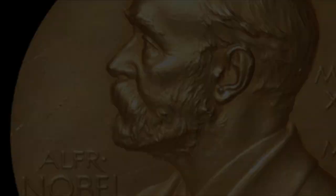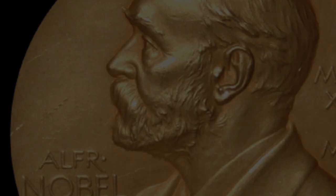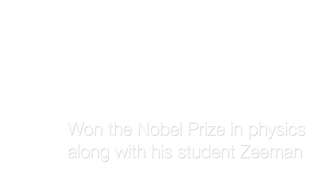Hendrik Anton Lorentz was a Dutch physicist in the late 19th century responsible for the derivation of the electromagnetic Lorentz force and the Lorentz transformations. He shared the 1902 Nobel Prize in Physics with his student Peter Zeeman for the discovery and theoretical explanation of the Zeeman effect.